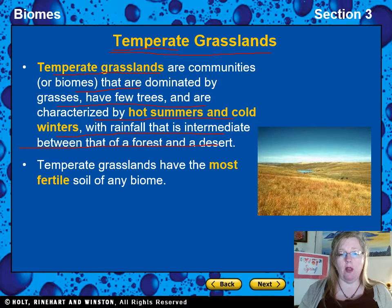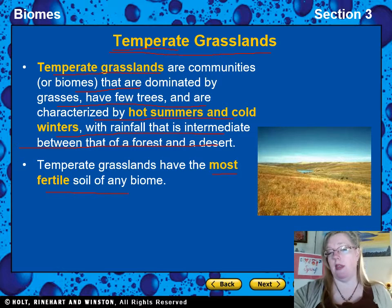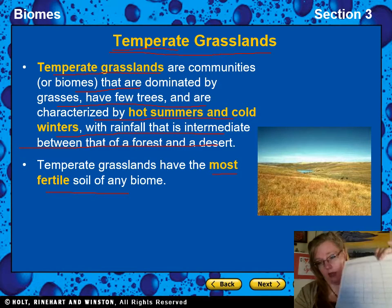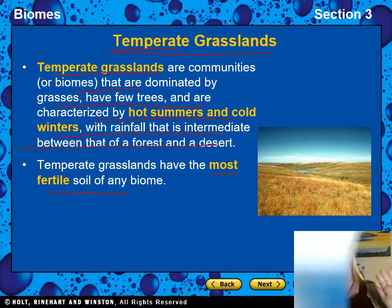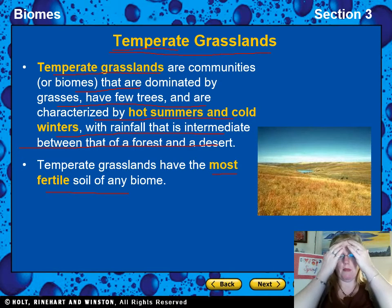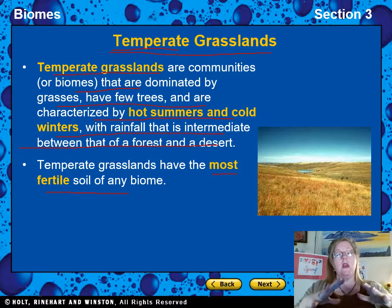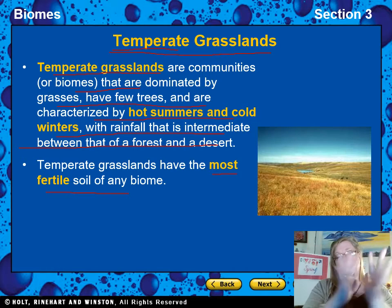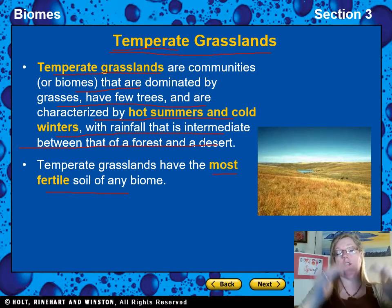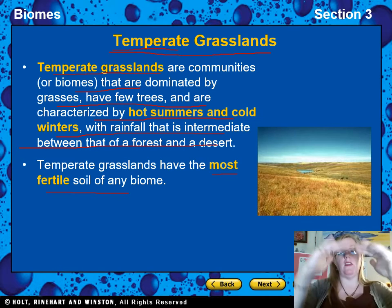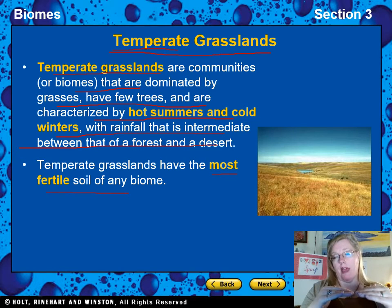Temperate grasslands have the most fertile soil of any biome — that's an incredibly important detail. Here's why: the grasses grow strong in hot summers, and then very cold winters bring a lot of snow. That snow sits on top of the dead grass all winter long. Because it's too cold, the grass can't decompose — it just sits there turning brown and gooky.